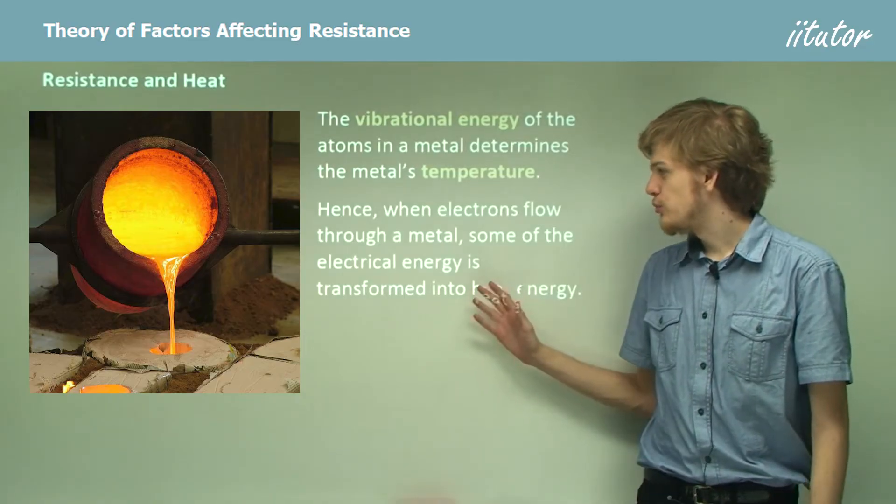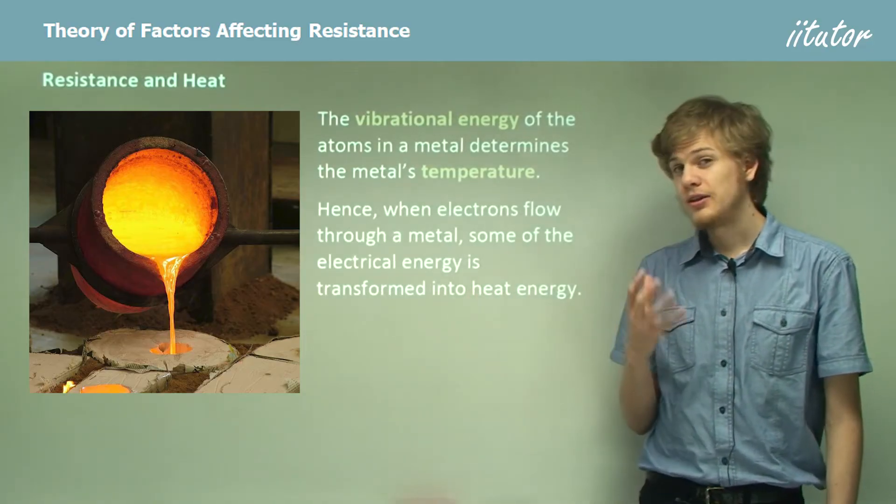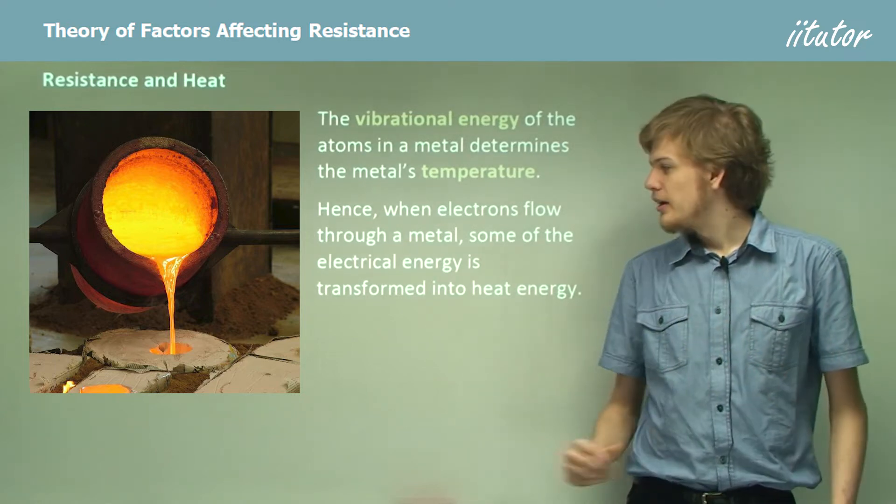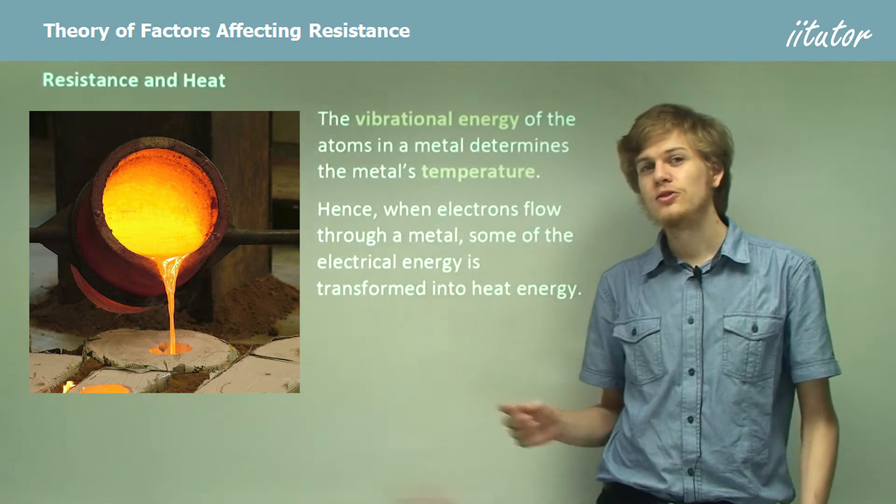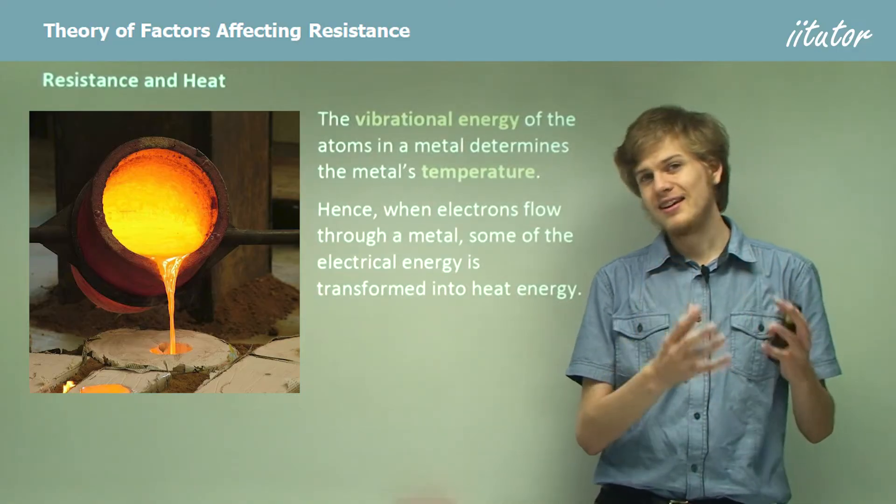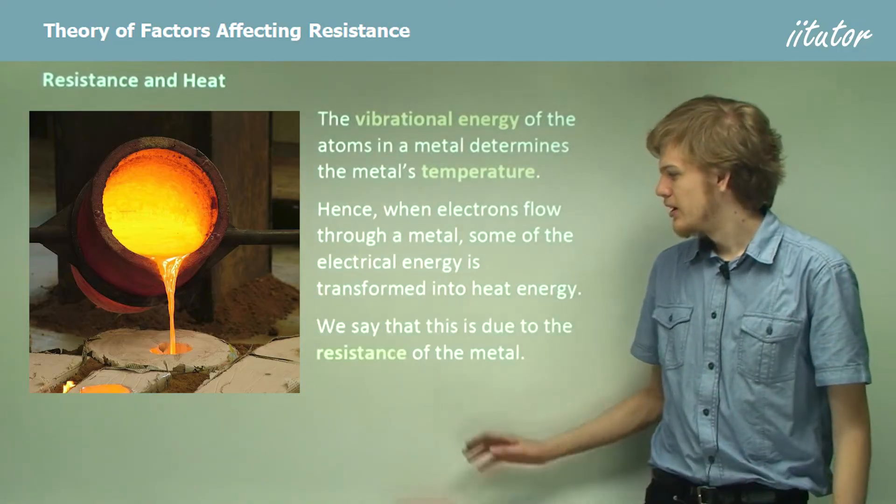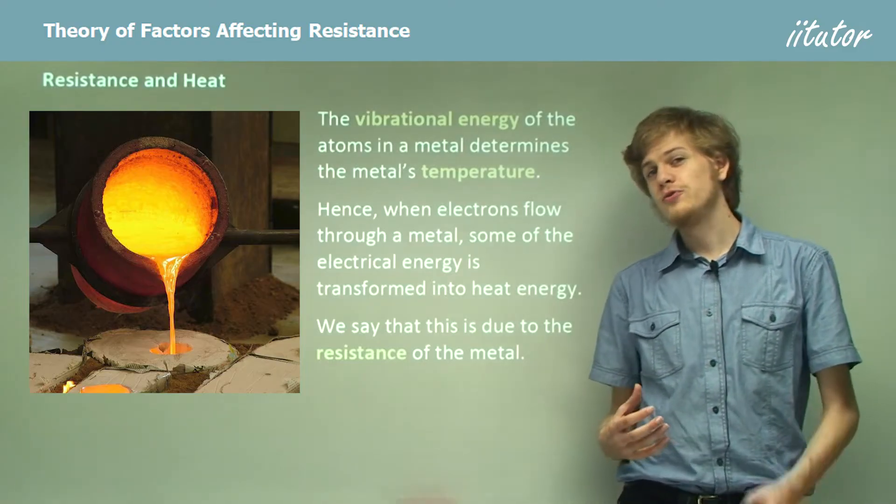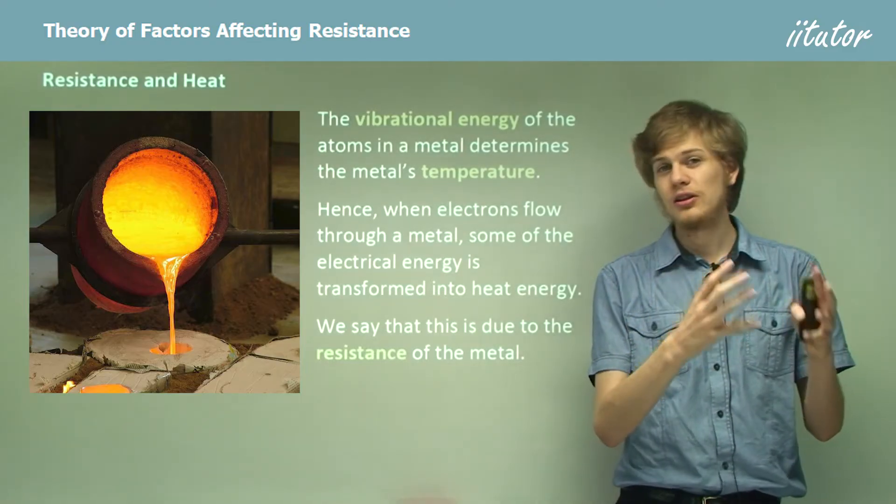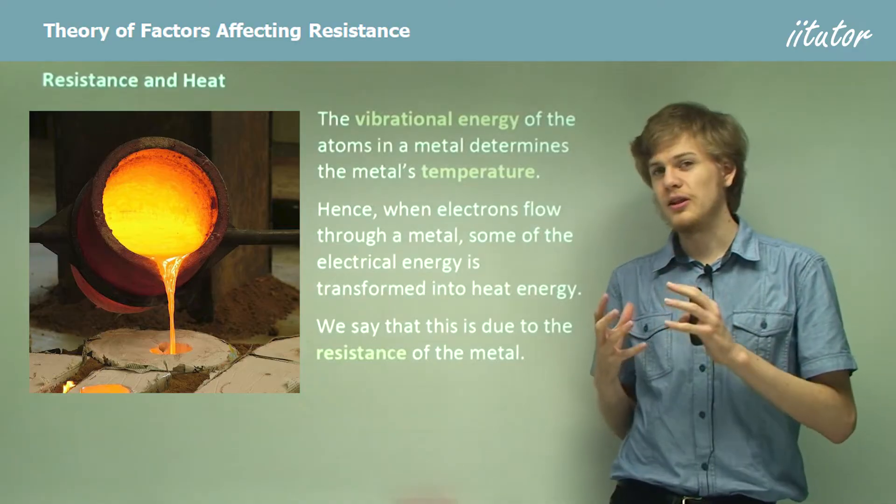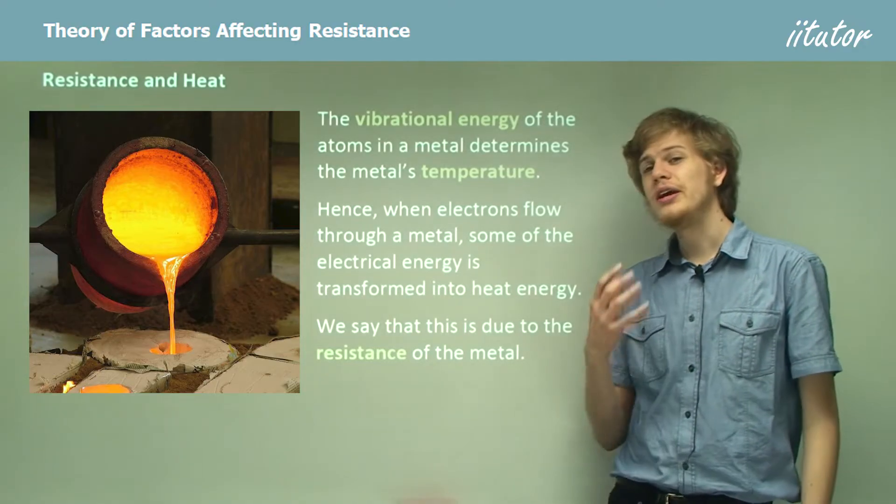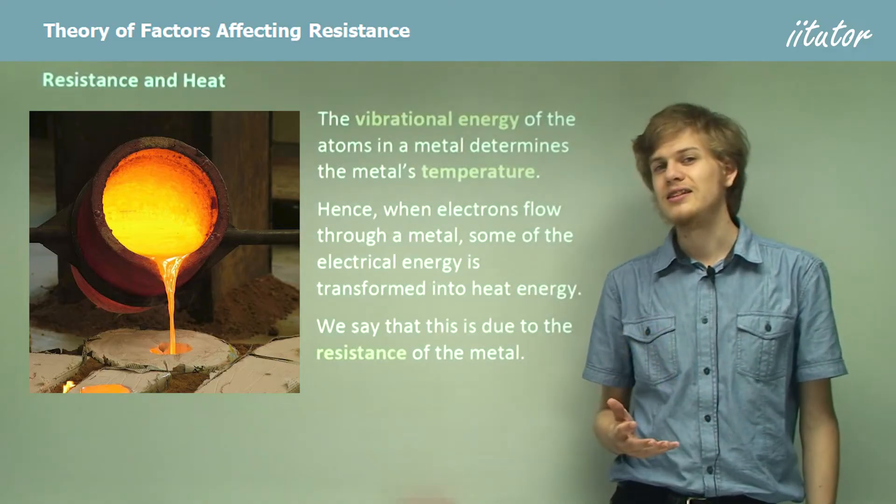So when electrons flow through a metal, some of the electrical energy, that is the movement of the electrons, is transformed into the heat energy, that is the vibrational energy of the lattice. So we say that the resistance of the metal has transformed the kinetic energy of the electrons into the vibrational energy of the lattice, that is the resistance has transformed the electrical energy into heat energy.